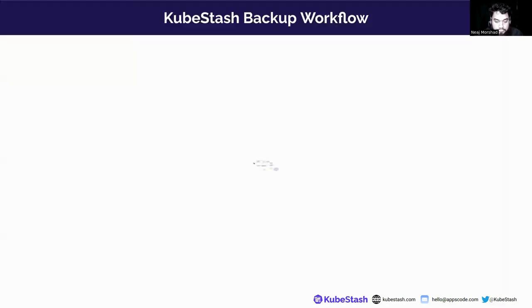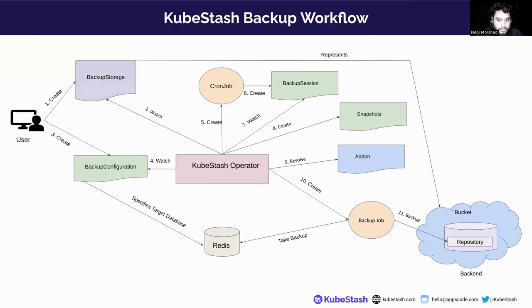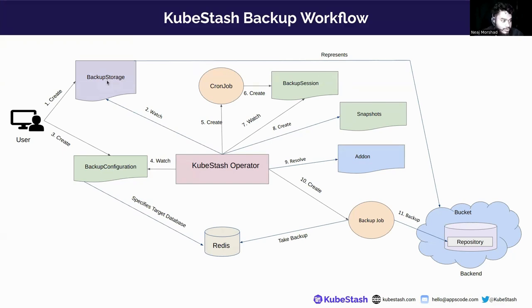Let's see a simplified overview of the KubeStash backup workflow. To take a backup using KubeStash, the user has to create a BackupStorage object, which contains the necessary information about the backend where the backup data will be stored. Then the user has to create a BackupConfiguration object, which contains information about the target database, the backup storage, repositories, and sessions. It can contain multiple sessions.